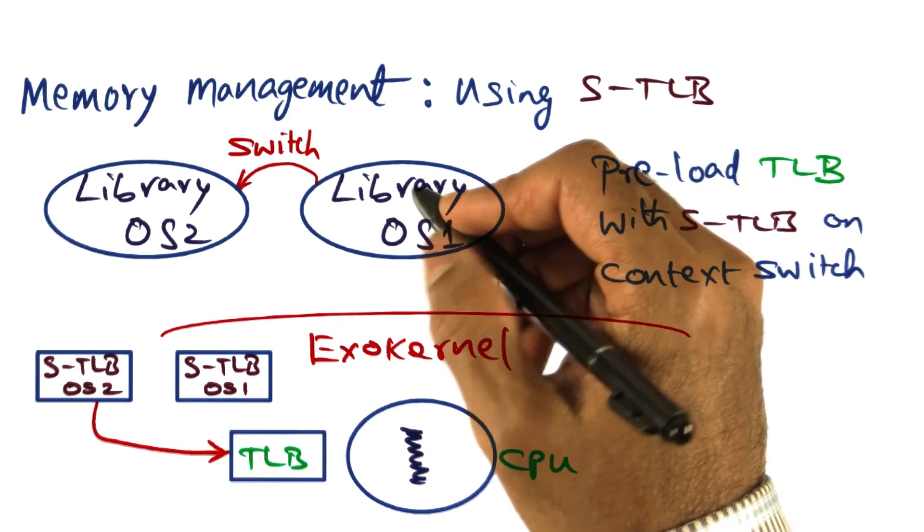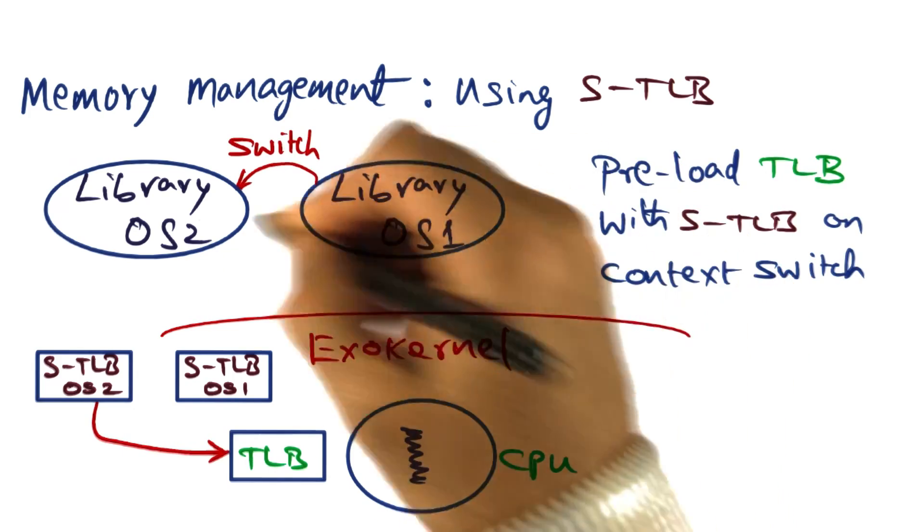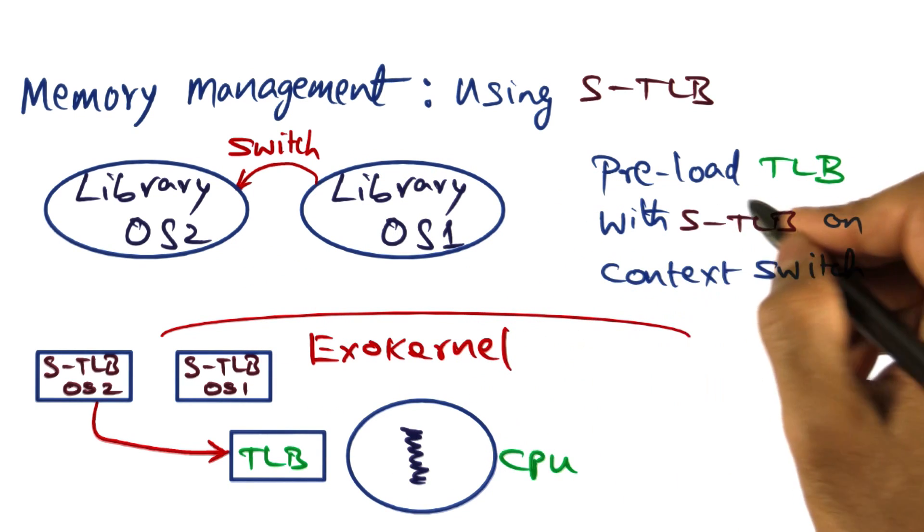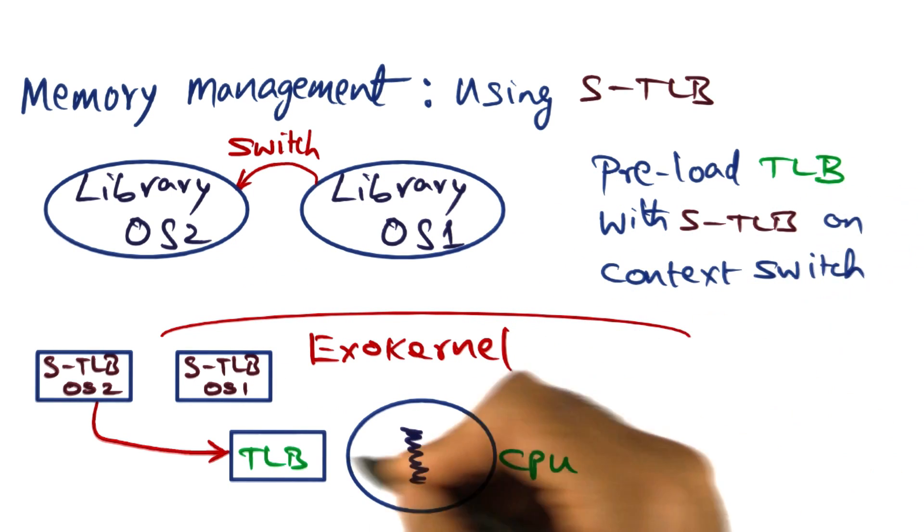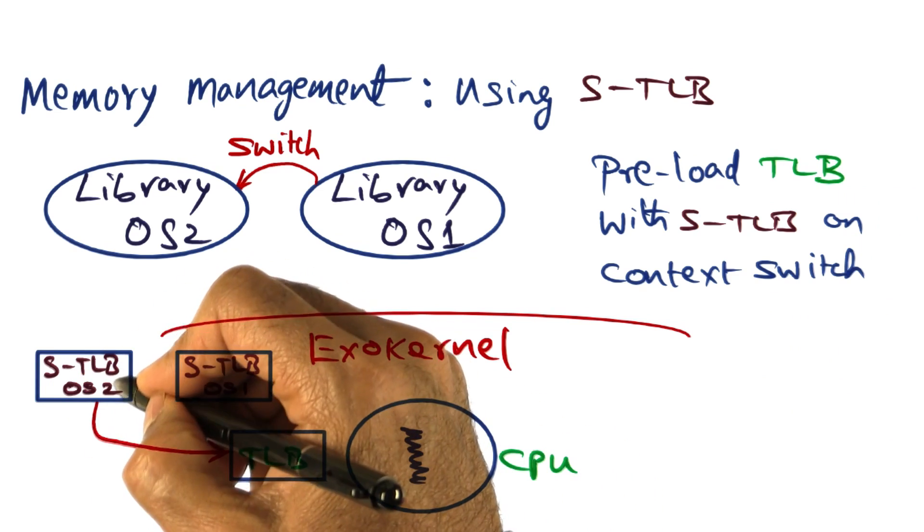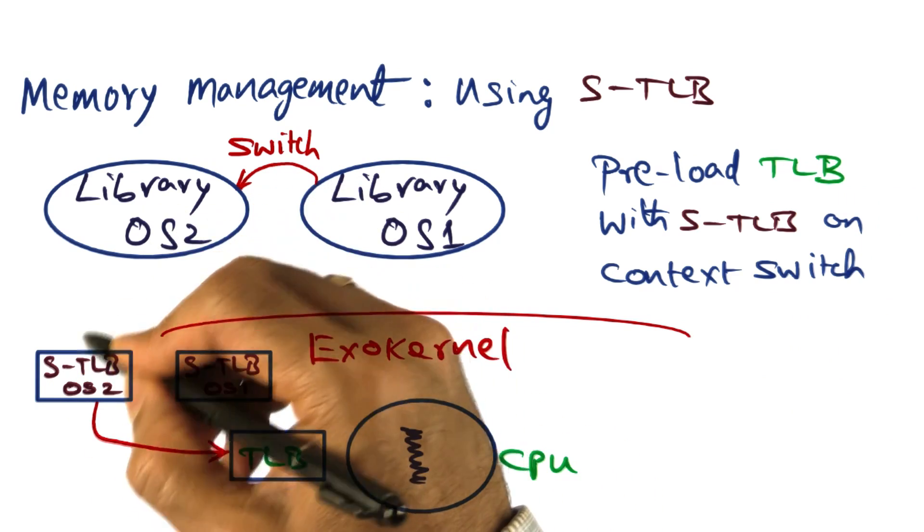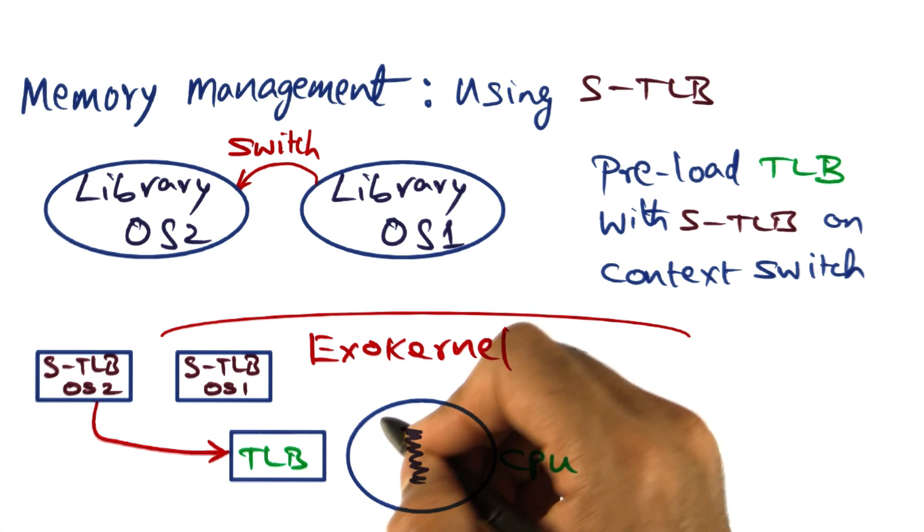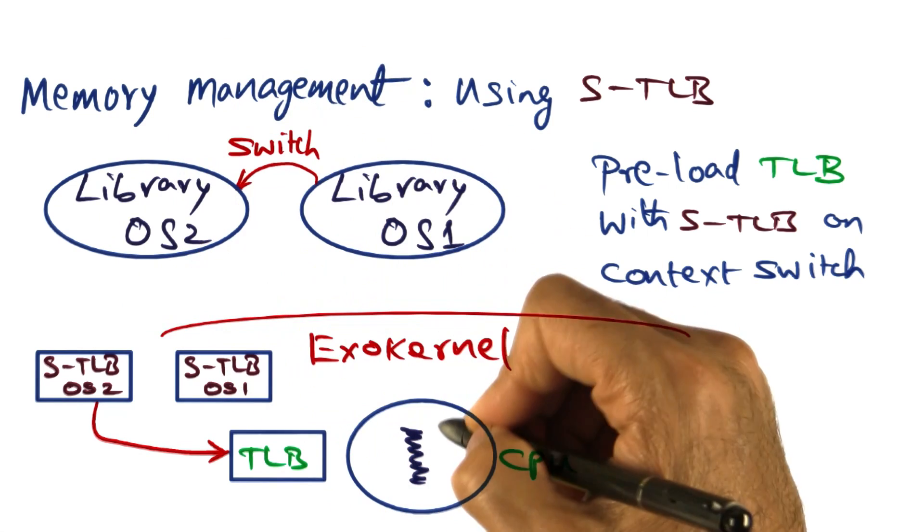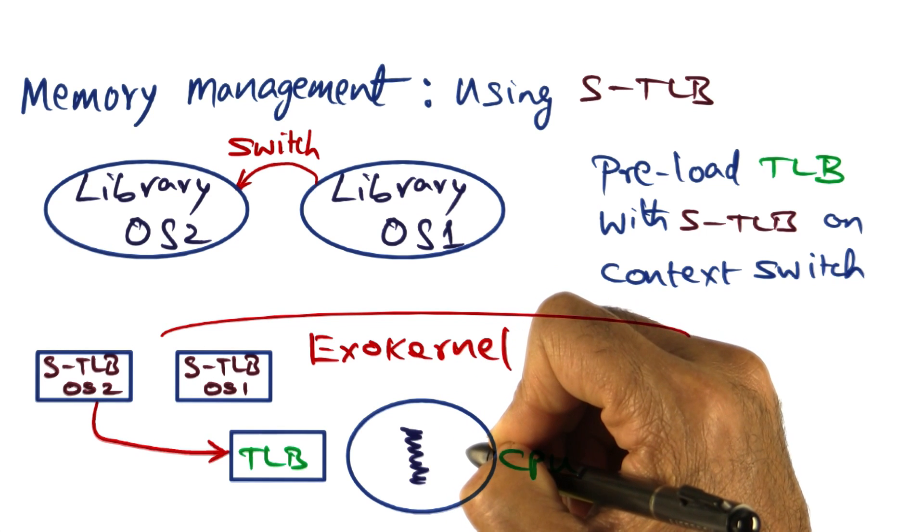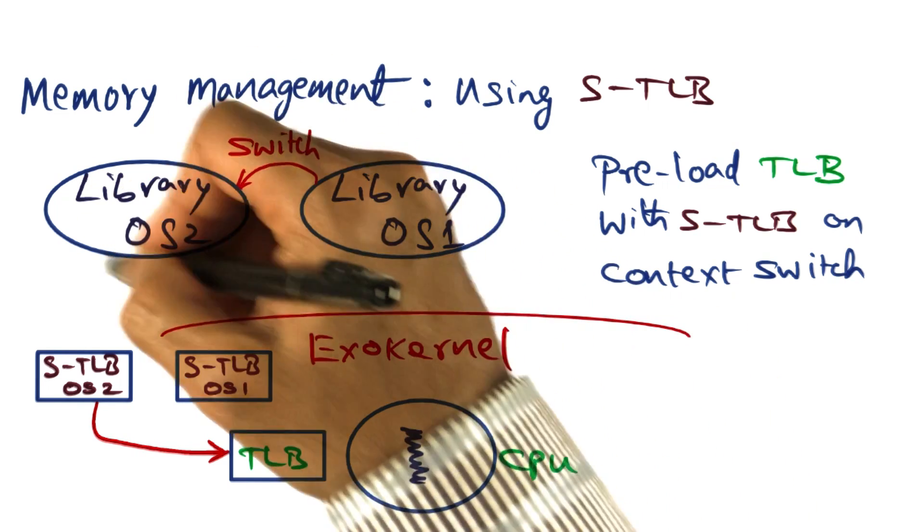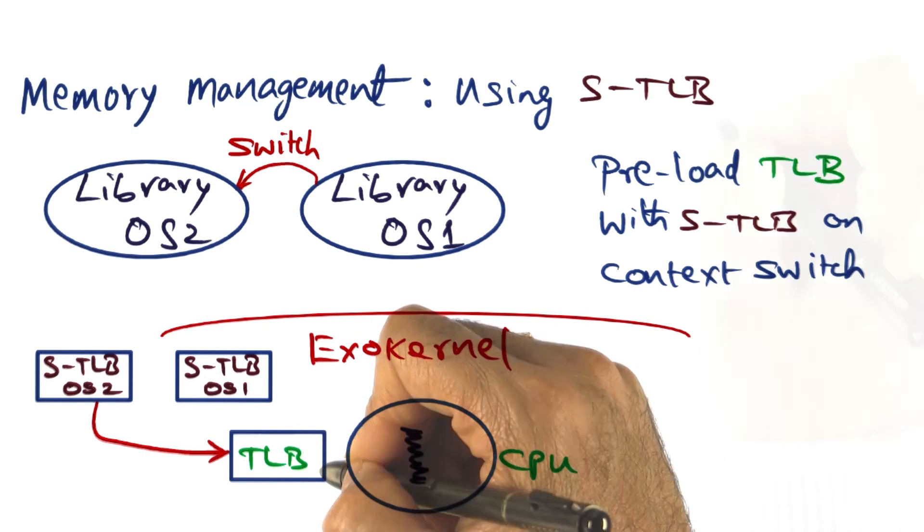Let's say that we are switching from this library operating system to this library operating system. In that case, what exokernel is going to do is preload the TLB with the software TLB data structure that is associated with this library operating system. Essentially, what we are accomplishing is that when the library operating system starts running on the CPU, it will find some of its mappings already present in the hardware TLB.